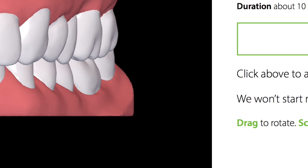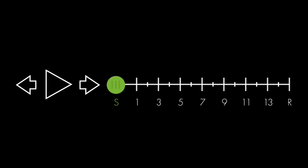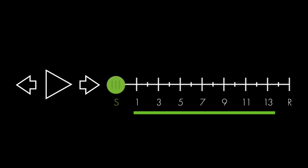At the bottom left of the setup, you'll see a timeline representing every step of the case. The starting position of the teeth is shown at the left. Steps with checkup appointments are numbered on the timeline, and the final position of the teeth is represented on the right as a retainer.